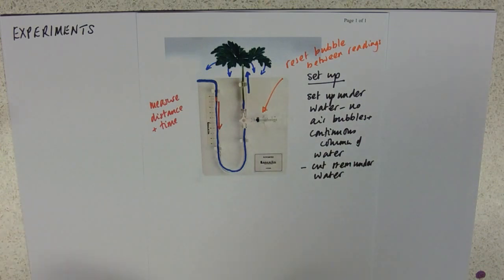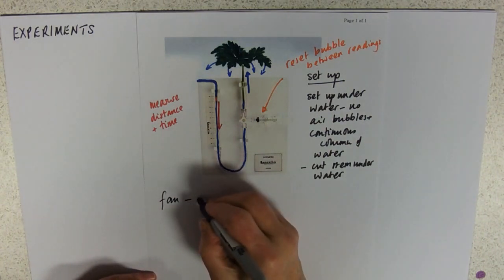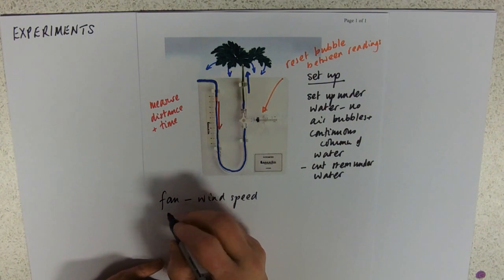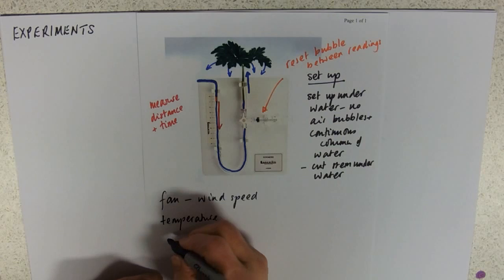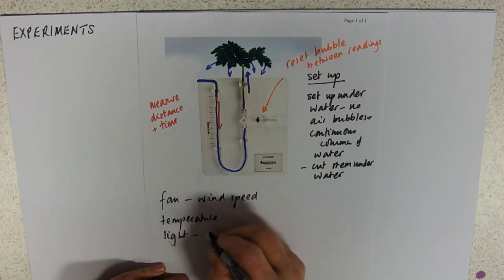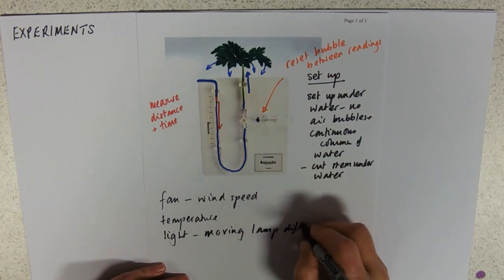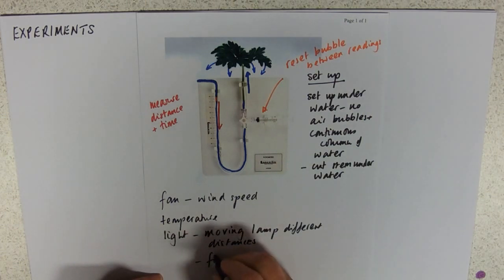So, things that we could investigate then, you can use a fan to do wind speed. You can alter temperature, not easily in a lab but it is possible. And you could do a light by moving the lamp different distances.